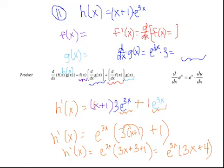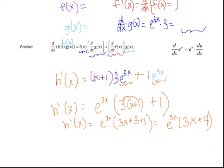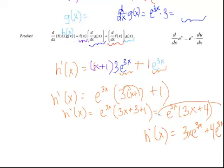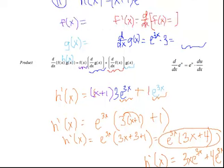If you chose, you could distribute that back in to get 3x e to the 3x plus 4 e to the 3x. However, e to the 3x times (3x plus 4) is the form that would be in the back of the book. In the next video, we're going to be looking at how you integrate an exponential base e.